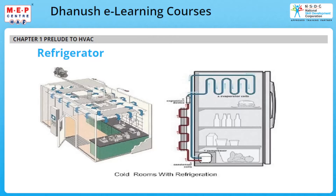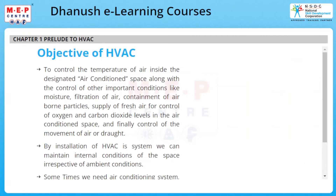The objective of HVAC is to control the temperature of air inside the designated air conditioned space, along with control of other important conditions like moisture, filtration of air, containment of airborne particles, supply of fresh air for control of oxygen and carbon dioxide levels, and control of the movement of air or draught. All these factors comprise a successful HVAC system. By installation of an HVAC system, we can maintain internal conditions of the space irrespective of ambient conditions.